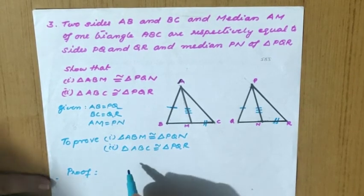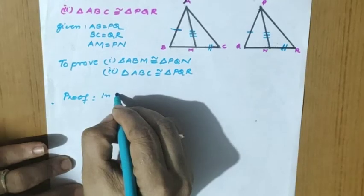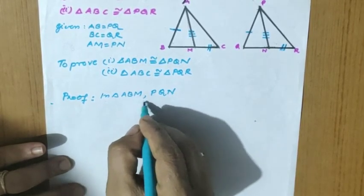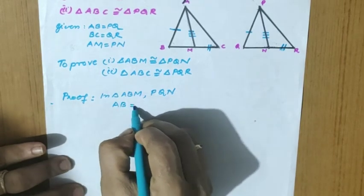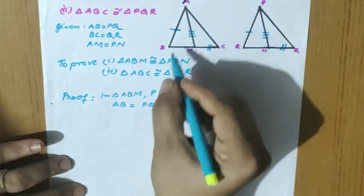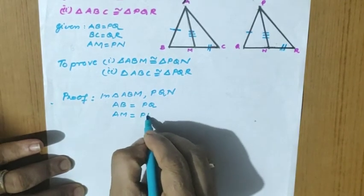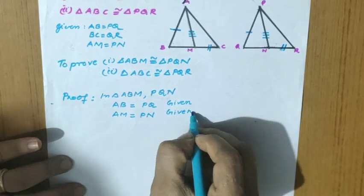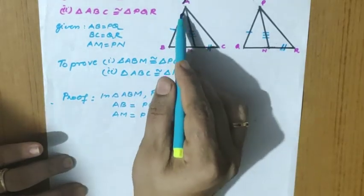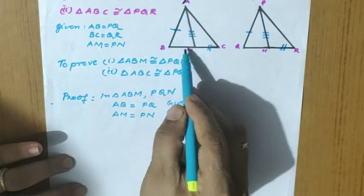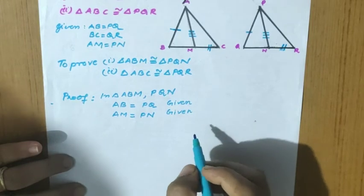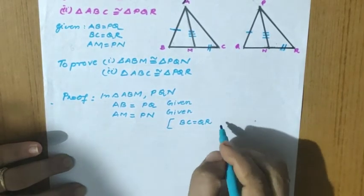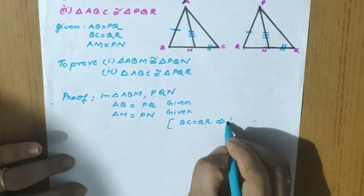In triangle ABM and triangle PQN: AB equal to PQ and AM equal to PN — two sides already given. For the third side of triangle ABM, AB is the first side and AM is the second side, so we need BM. Since BC equal to QR is given, half of BC equals half of QR.